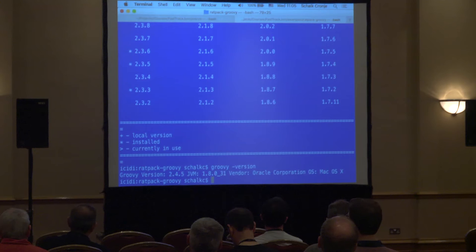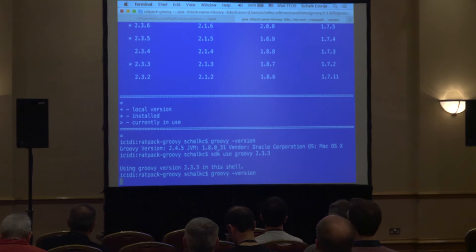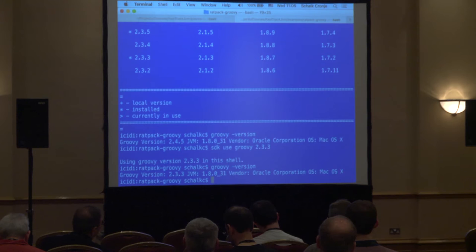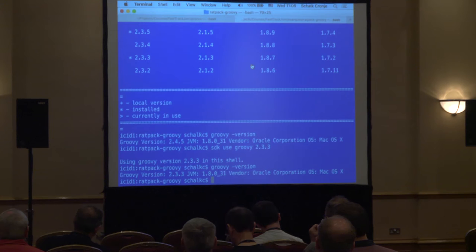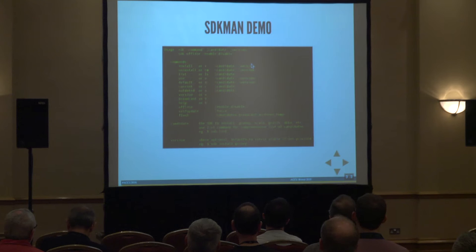If I run 'groovy -version', that shows 2.4.5. I don't want to use that version. Let's use 2.3.3 — you just say 'sdk use groovy'. Run it again — I have Groovy in my shell, different version. What's really useful is if you want to play with different versions of a tool you can quickly switch. I do a lot of Gradle development. Sometimes something doesn't work in one version of Gradle — someone's found a bug — I can quickly test by just switching the version of Gradle. So it's very useful if you want to play with different versions.